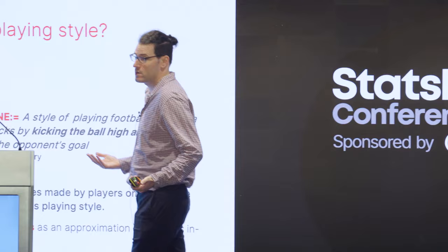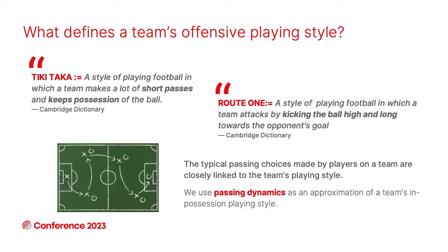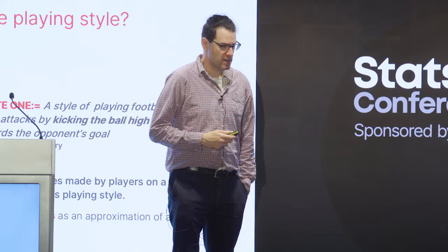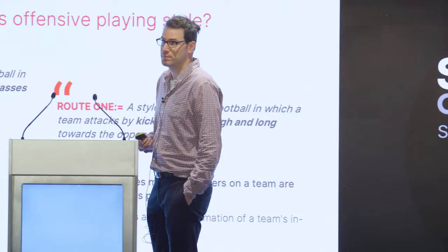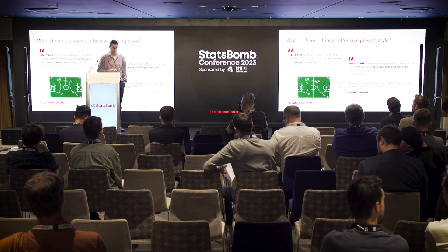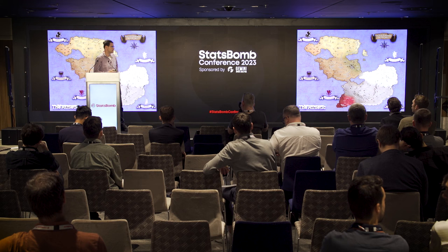When we think about game playing style, we all know certain terms that describe how a team behaves when they're in possession of the ball. You can think of well-known styles like tiki-taka, characterized by short passes designed to retain the ball. On the other end of the spectrum, route one, where teams tend to play the ball long and directly up the field. Typical passing choices made by players are somewhat indicative of style.